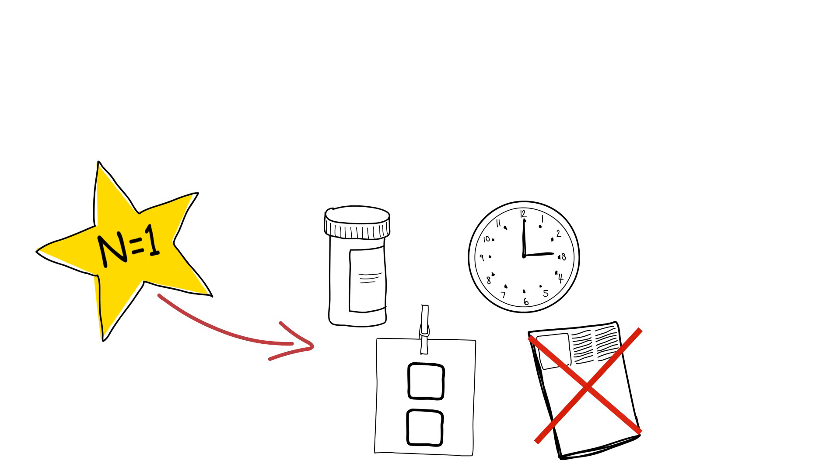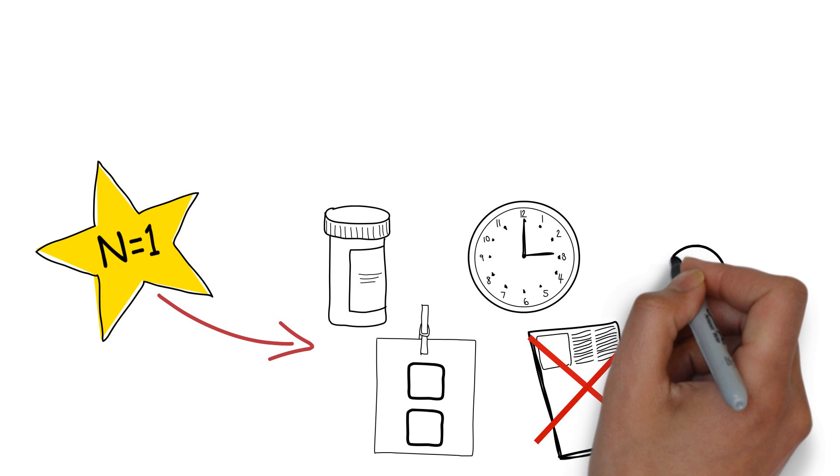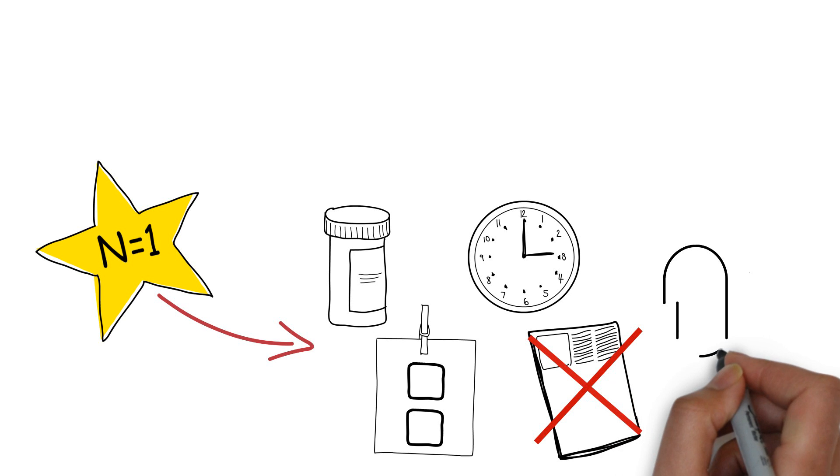Academic careers are not really made on the backs of N of 1 studies. A last consideration are the types of people you have to have involved for an N of 1 study. Your patient will need to have the capacity for cooperation and compliance. Chances are you're also going to need a pharmacist who can provide you with randomized blinded samples for you to provide to your patient.